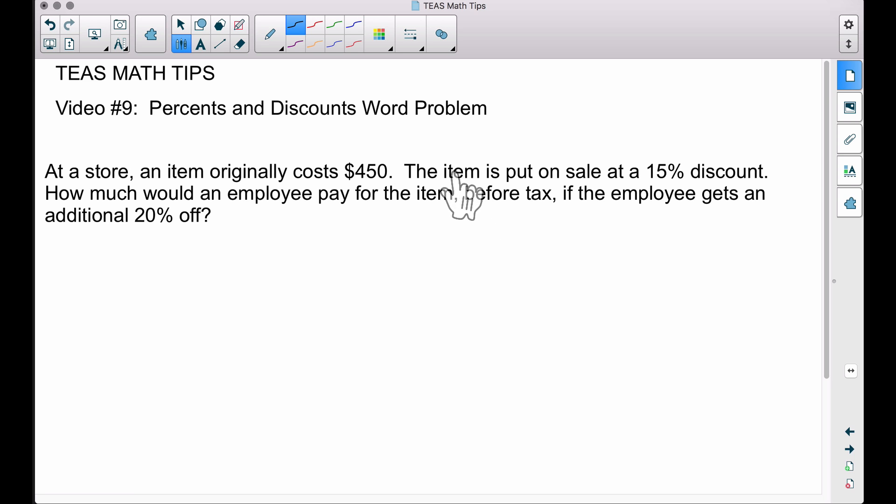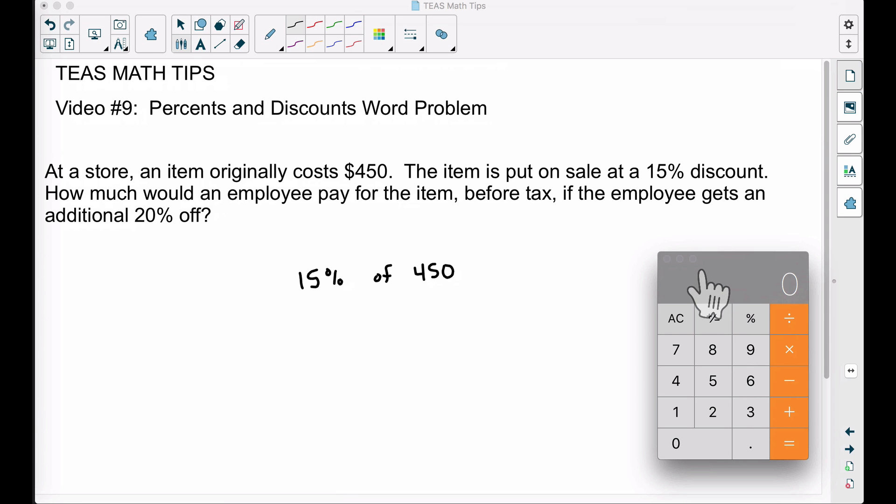The first thing we want to figure out is this. The item's on sale, and if like you and I walked into the store and we're not employees, we would get a 15% discount on this item. So let's find 15% of $450.